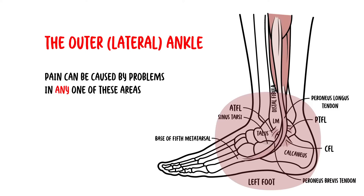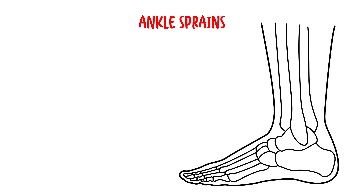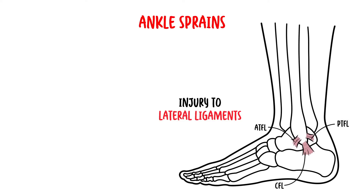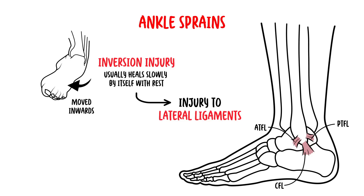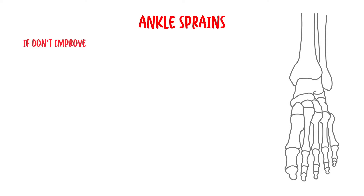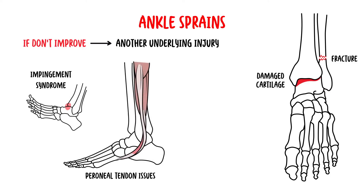Lateral ankle or outer ankle pain can be caused by problems in any one of these areas. Common causes include ankle sprains, which involve injury to the lateral ligaments from an inversion injury, and usually heal with rest. Lateral ankle sprains that don't improve may indicate an underlying injury such as damaged cartilage, fracture, impingement syndrome, peroneal tendon issues such as tendinopathy, rupture, or dislocation, and sinus tarsi syndrome.